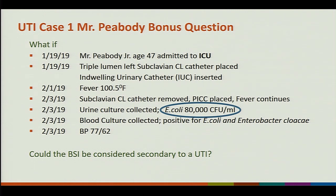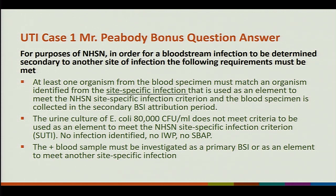I'm going to give you a bonus question. What if that urine culture that was collected was only 80,000 CFUs per mL? Same scenario — but could the BSI be secondary to a UTI? For the purpose of NHSN, in order for that bloodstream infection to be determined secondary to another site of infection, at least one organism from the blood specimen must match the organism identified from the site-specific infection used as an element to meet the NHSN site-specific infection criterion, and the blood specimen must be collected in the secondary BSI attribution period. This urine culture of 80,000 does not meet that criteria. So no infection identified, no IWP, no SBAT.